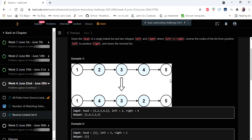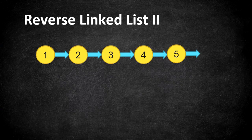The second node starts at index 2 and the fourth node ends at index 4, so we have to reverse only these three nodes. After reversing, our linked list will look like this. So how are we going to approach this problem? We have already covered in our channel how to reverse a complete linked list from head to tail.